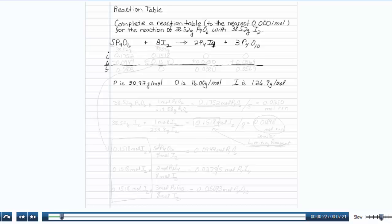Now, since the gram amounts are the same, you might think there's no limiting reagent, but that's not the case. Let's write the gram amounts underneath each reactant: 38.52 grams here and 38.52 grams here.